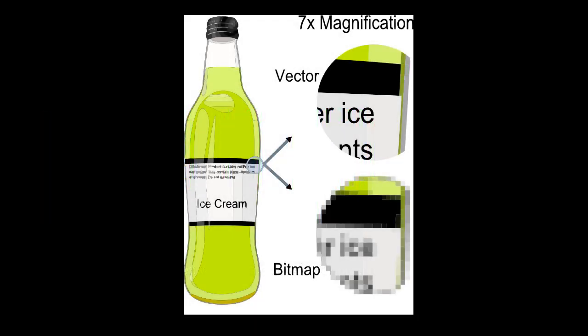Now, in contrast to bitmap, also known as raster graphics — raster, by the way, comes from Latin meaning to rake, because it refers to the way in which, particularly in a CRT, there's a scan line gun that goes line by line through the pixels setting all of their colors. That's why it's called raster graphics. But in contrast to raster graphics, there are what are called vector graphics.